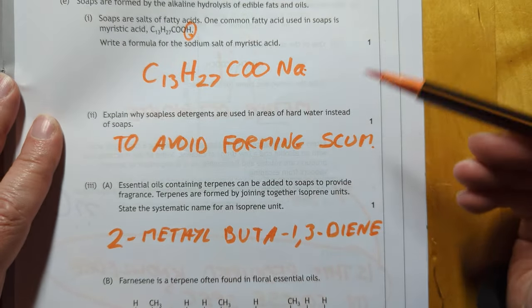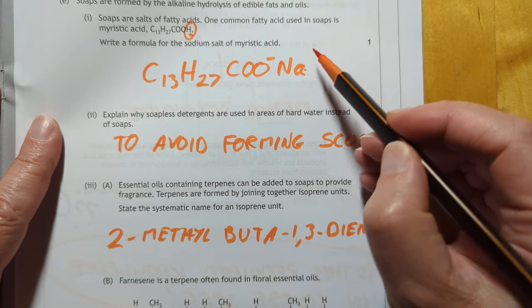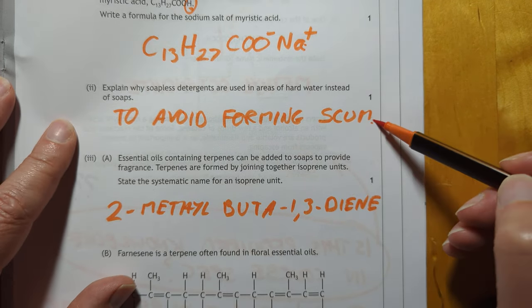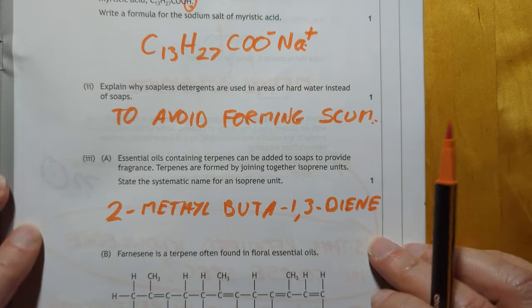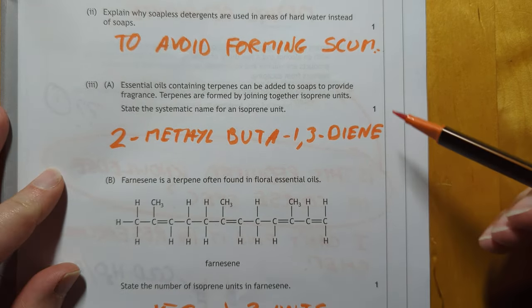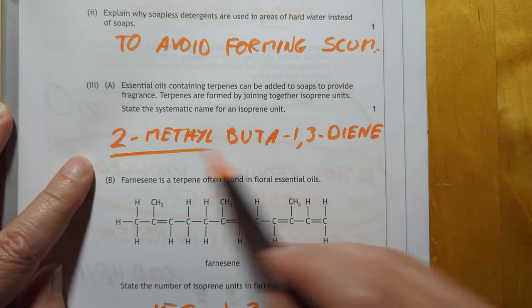Chop that H off, replace it with sodium. Put the charges in it if you want. Don't think you have to. There you go. That's why I use soapless detergents. Not really relevant to Scotland, but relevant to the south of England. That's it.